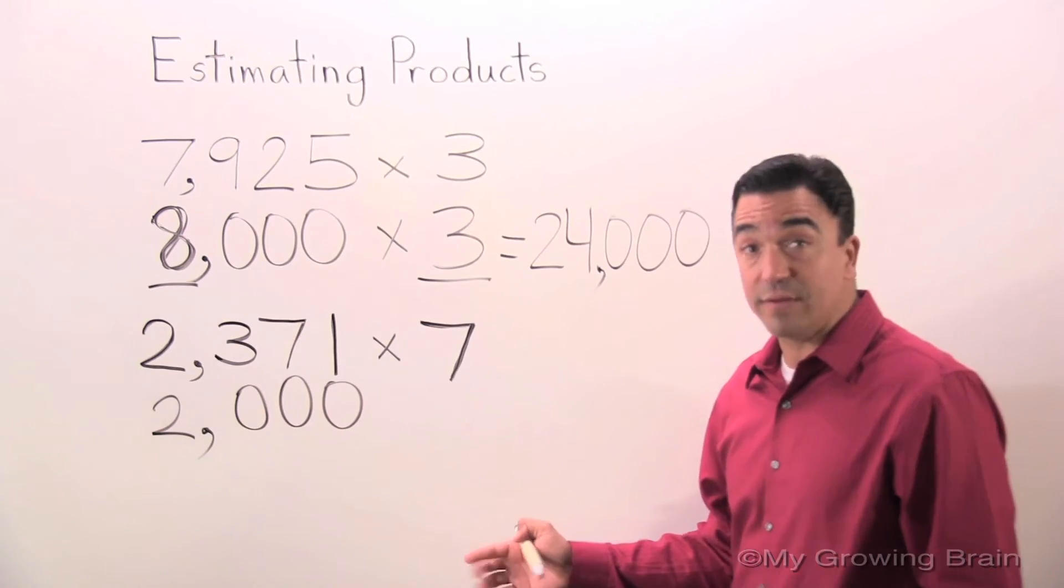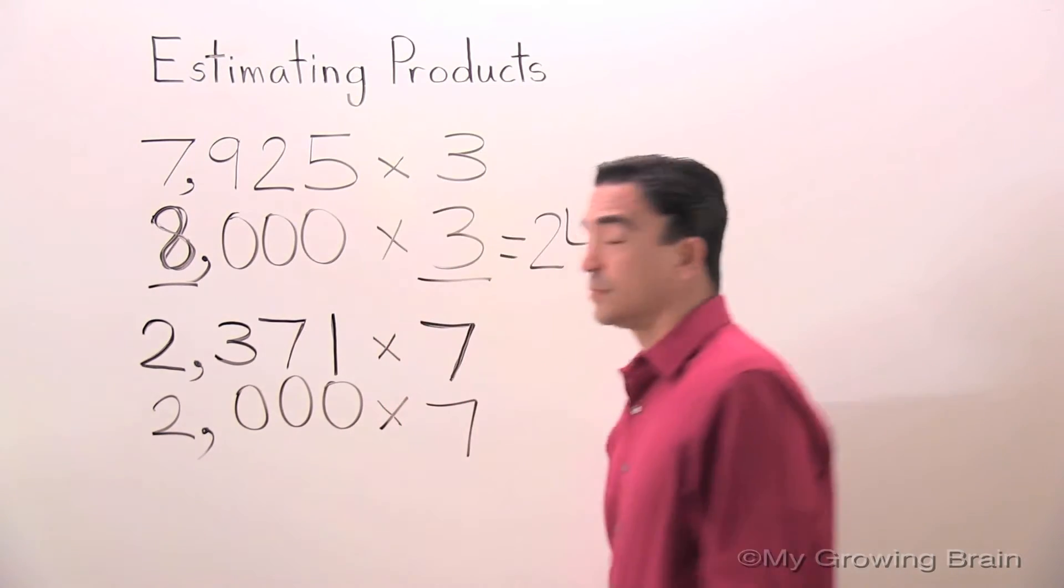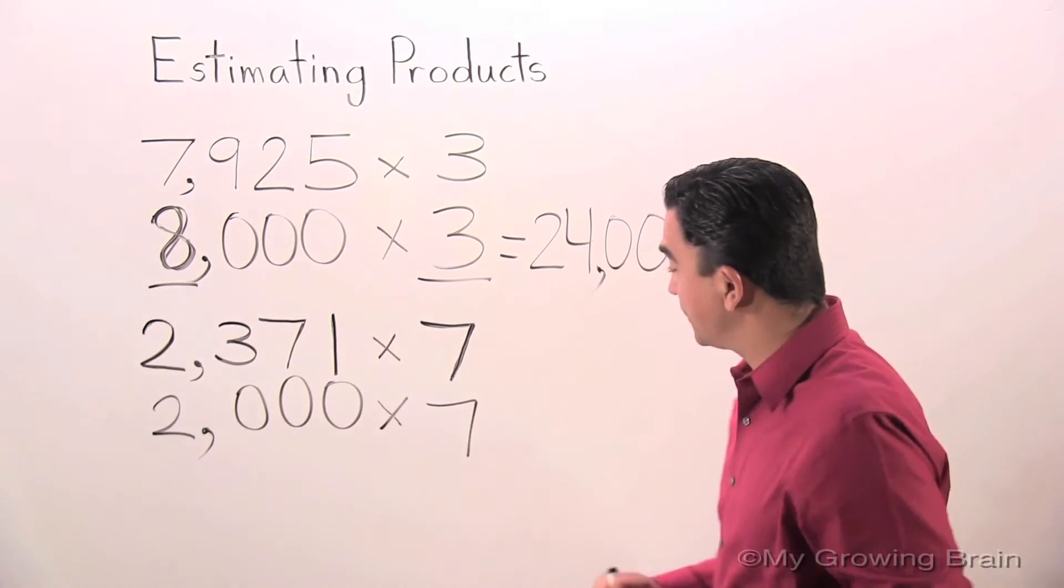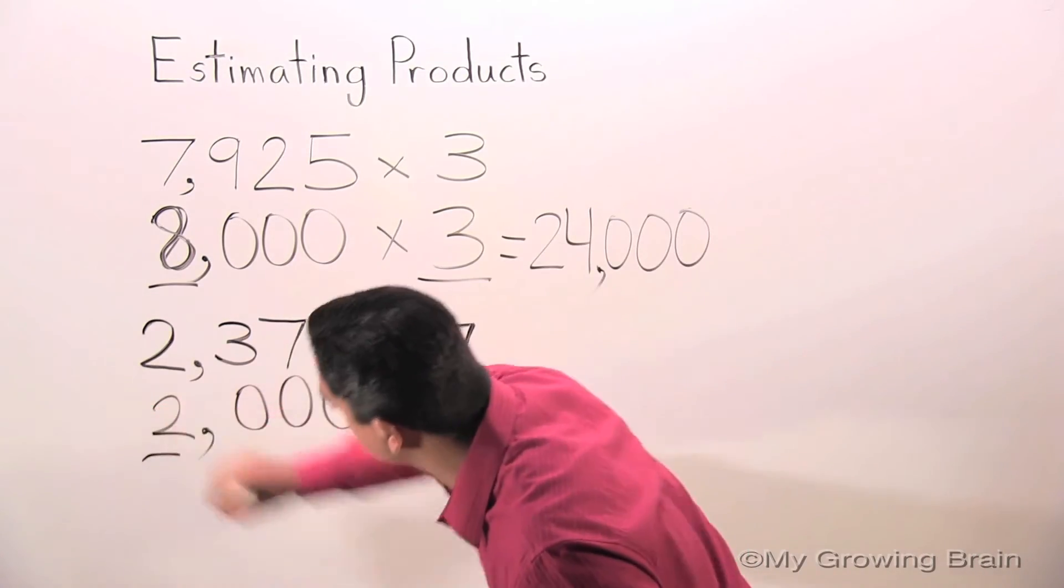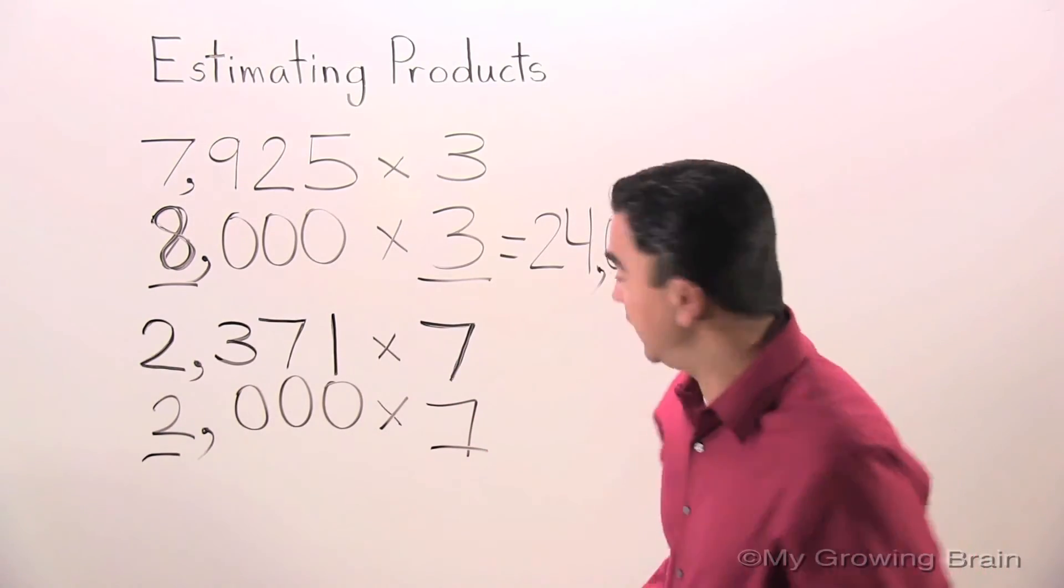I'm going to drop the seven. Once again, I'm going to use mental math. Two times seven equals 14.